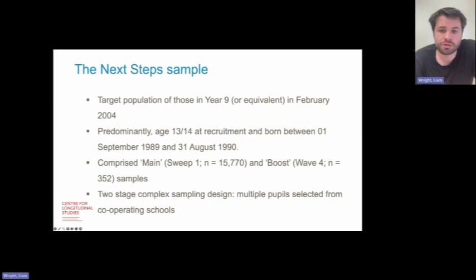The main sample was recruited using a two-stage complex sampling design. Schools were first selected and multiple pupils were then recruited from those schools. Schools with high numbers of children who are eligible for free school meals or with large numbers of ethnic minority students were oversampled and within selected schools individuals from ethnic minority backgrounds were oversampled too.